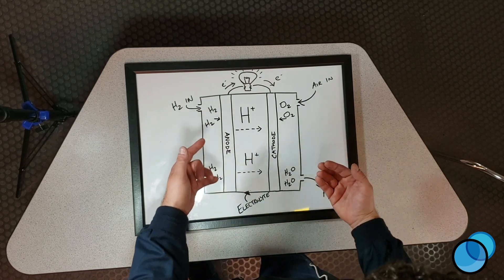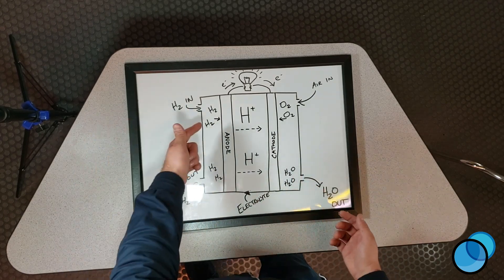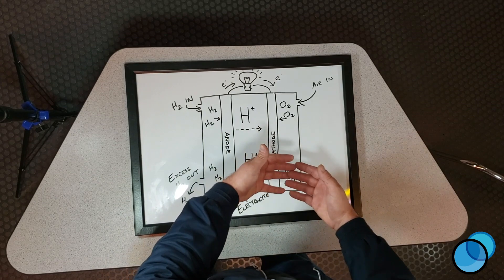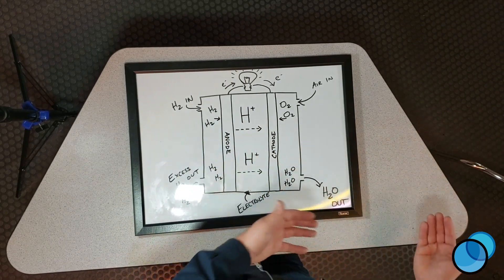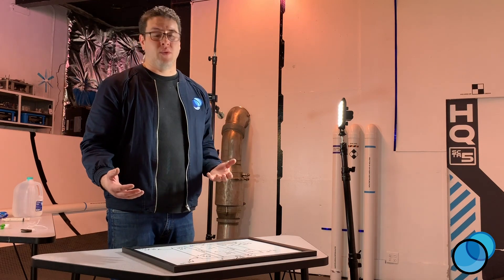Now this whole process is creating energy and it's making water. So we have hydrogen flowing in through one side, kind of creeping through the middle, meeting up with oxygen, making water and making power. The simplest terms, that's how a fuel cell works.